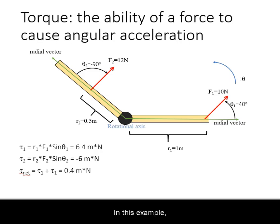In this example, there are multiple forces producing torque. Force 1 produces 6.4 meter newtons of torque. Force 2 produces negative 6 meter newtons of torque. The net torque is the vector sum of these two for a total of 0.4 meter newtons.